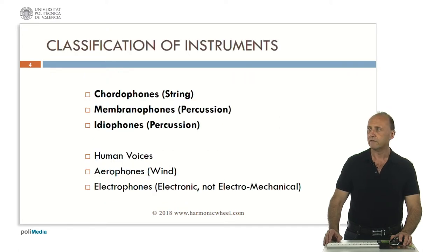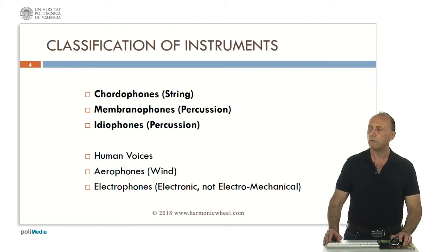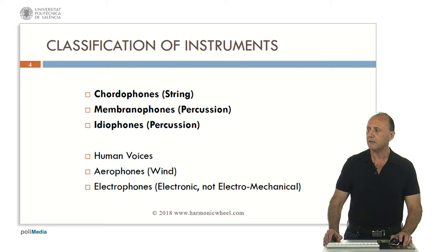From the general classification of instruments, in this presentation we are going to analyze the timbres of chordophones — that is, string instruments — membranophones, which are percussion instruments, and idiophones, which are also percussion instruments. In a different presentation, we will analyze the timbres of human voices, aerophones or wind instruments, and electrophones — in that case, only pure electronic instruments and not the electromechanical ones, which will be classified in the previous groups.